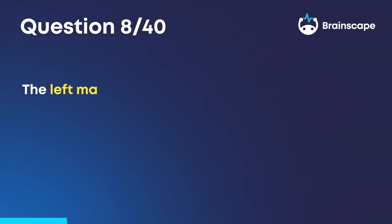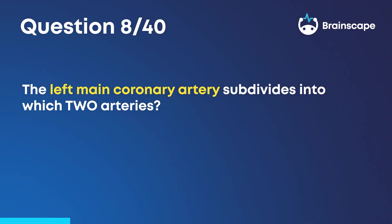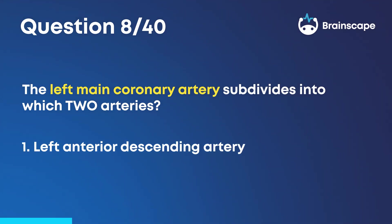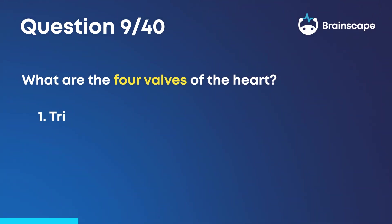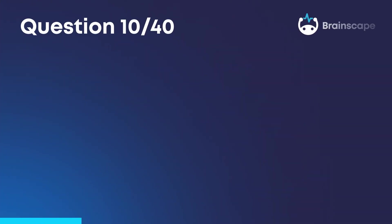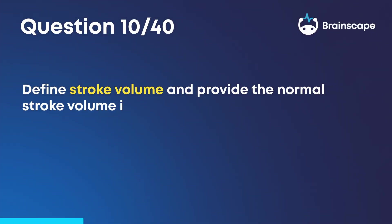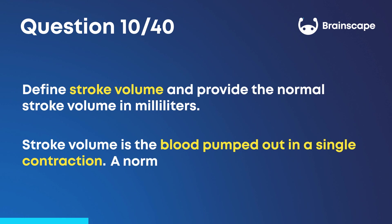Question 8: The left main coronary artery subdivides into which two arteries? The left anterior descending and left circumflex arteries. Question 9: What are the four valves of the heart? The tricuspid, mitral, pulmonary, and aortic valve. Question 10: Define stroke volume and provide the normal stroke volume in milliliters. Stroke volume is the blood pumped out in a single contraction. A normal stroke volume is 60 to 100 milliliters.